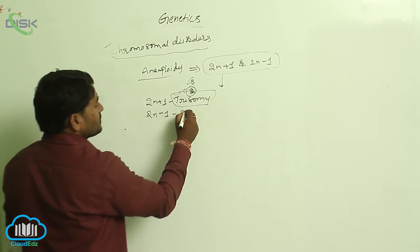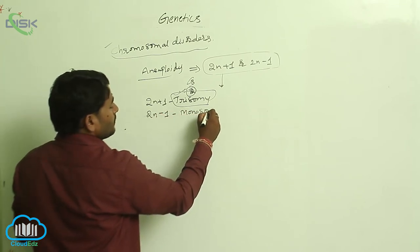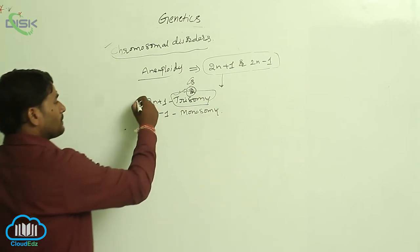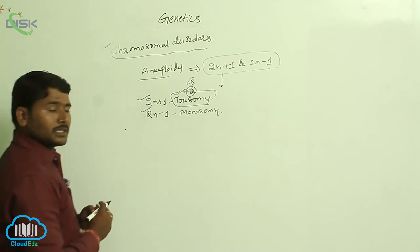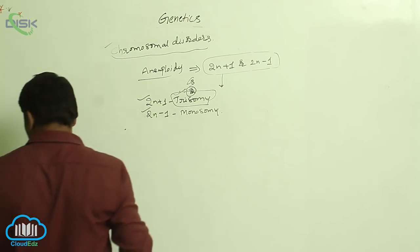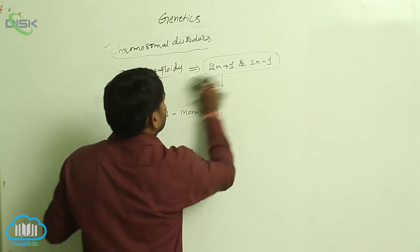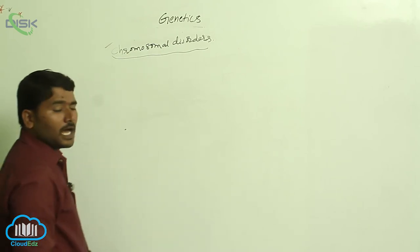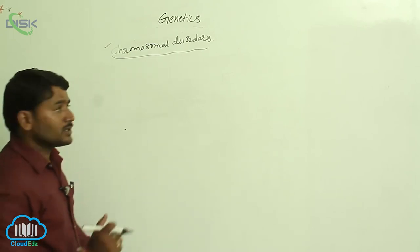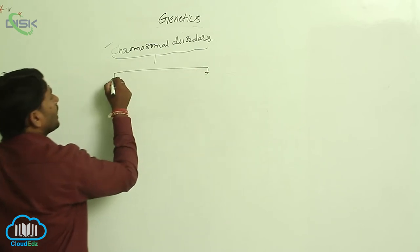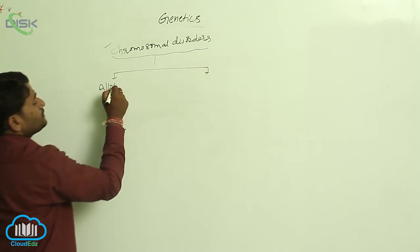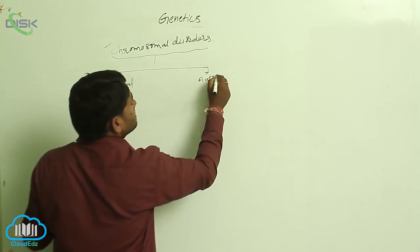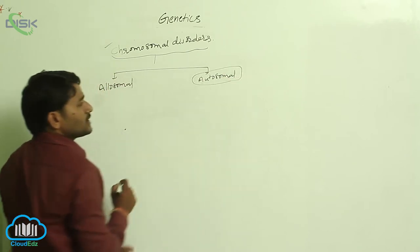2n+1 is called trisomy. 2n-1 is called monosomy. Chromosomal disorders are classified into two types based on whether the chromosomes affected are autosomes or allosomes — that is, autosomal disorders or allosomal disorders.